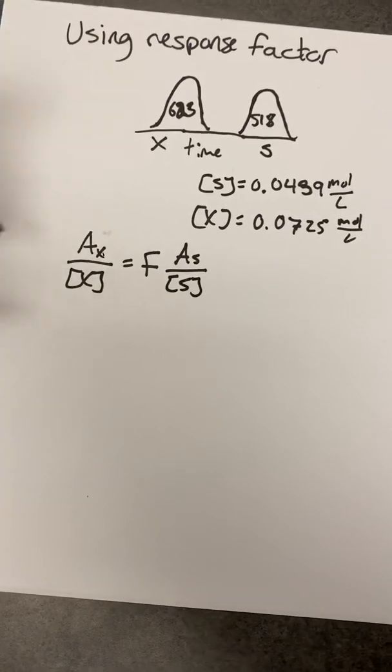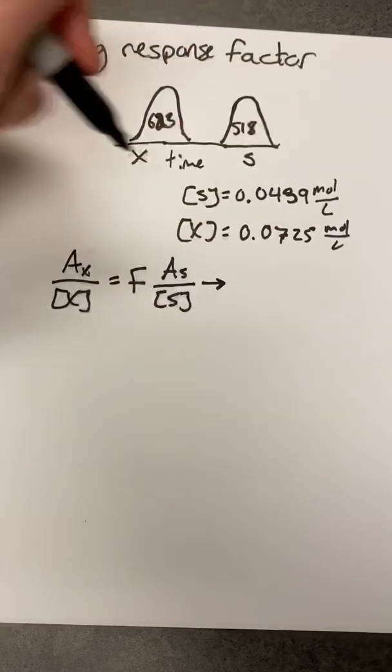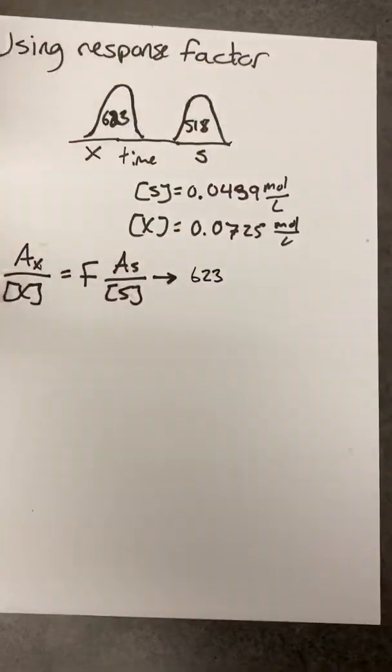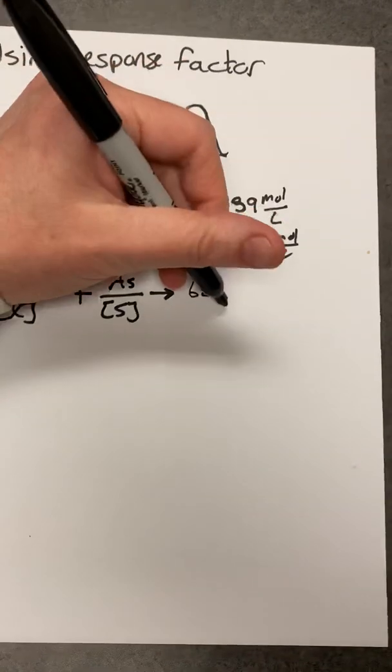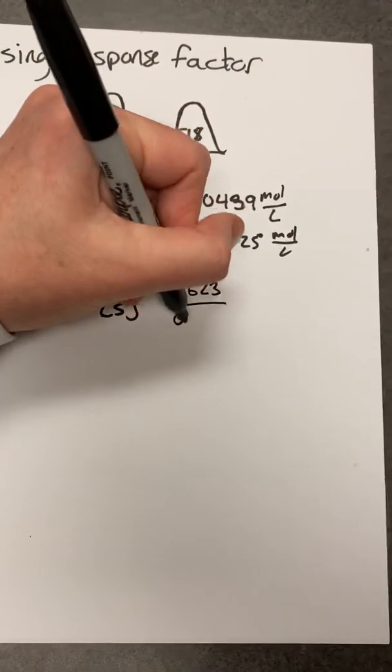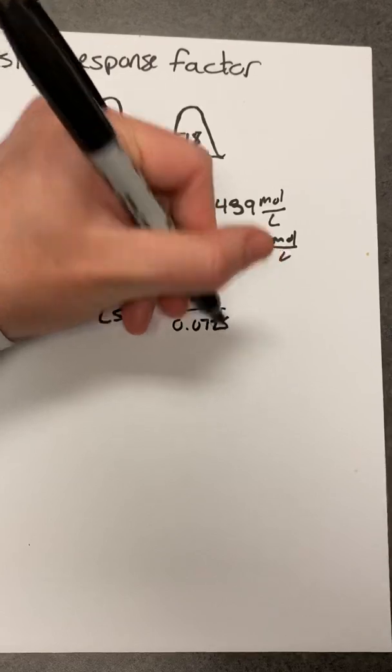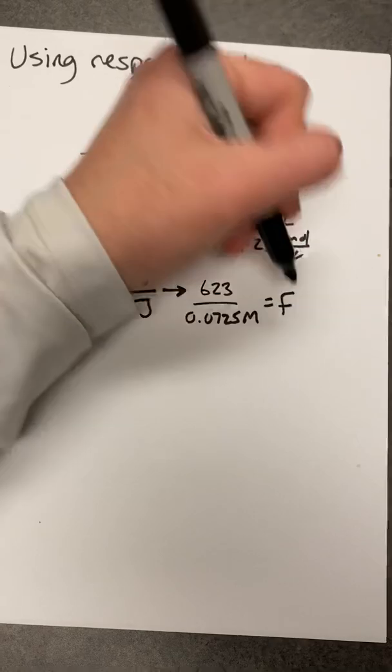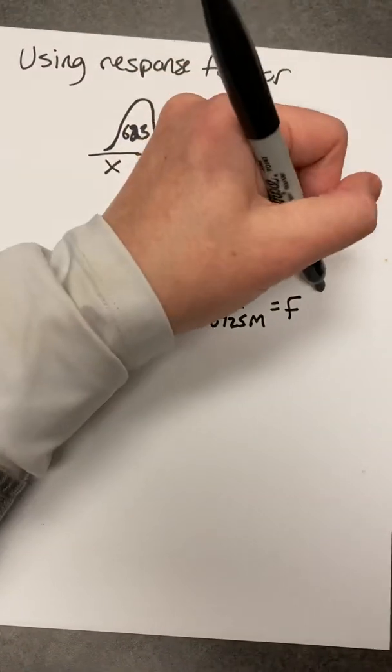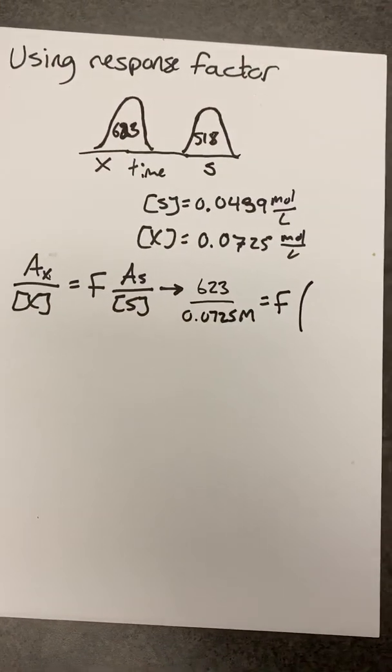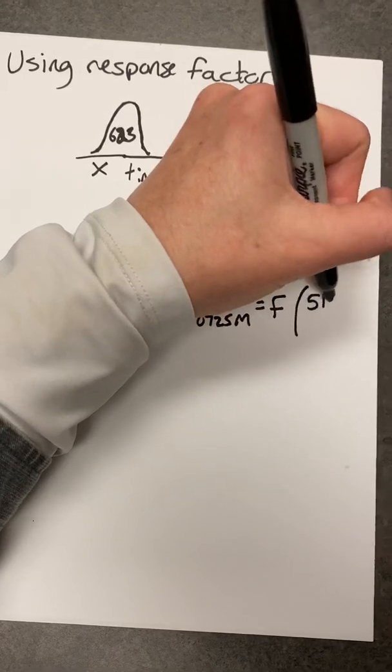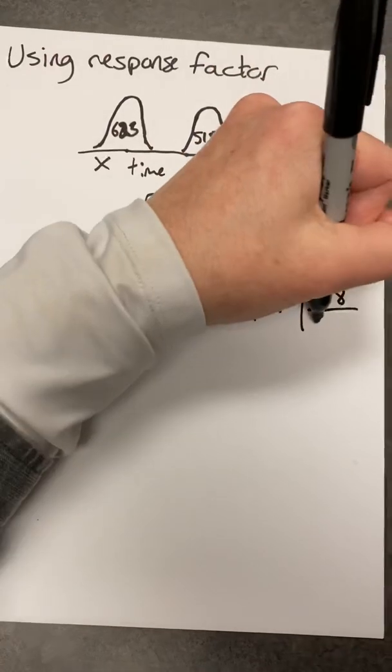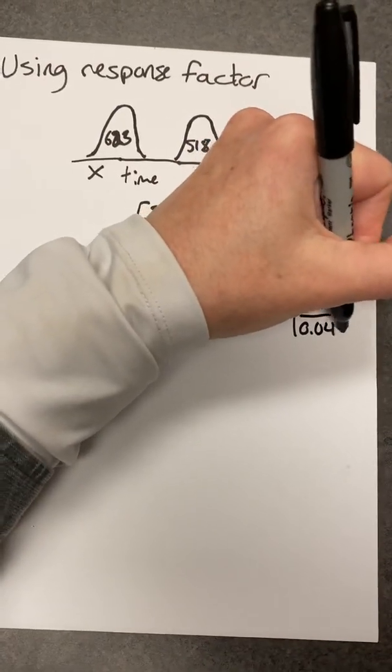And with some simple plug and chug, we know that the area of X was 623. We know that its concentration, 0.0725. And we'll set that equal to some response factor F times the area of S, which is 518 we determined, divided by the concentration of S, which is 0.0439.